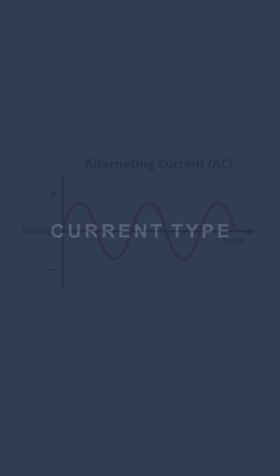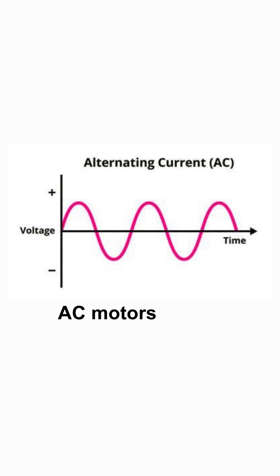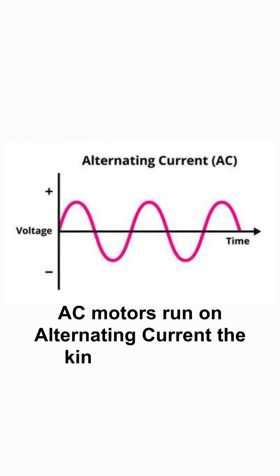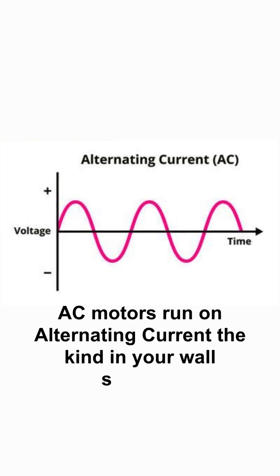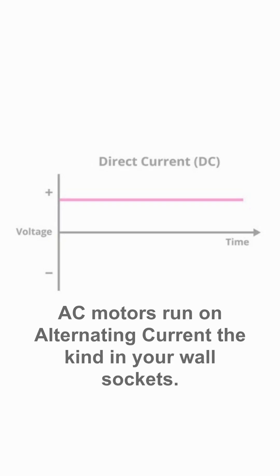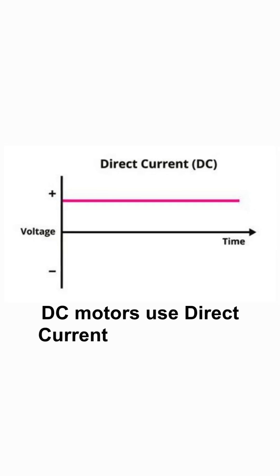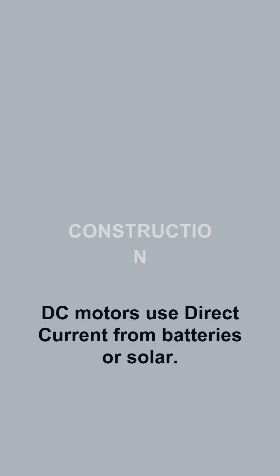Current type. AC motors run on alternating current, the kind in your wall sockets. DC motors use direct current from batteries or solar.